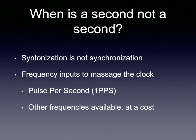One common frequency input used to control syntonization is one pulse per second (1PPS) — a signal from a higher-quality clock that comes in over a serial line, used to control clock frequency problems. Other frequencies are available at a cost. As always, the more accurate you want your clock to be, the more time, effort, and money you'll have to put into achieving that.